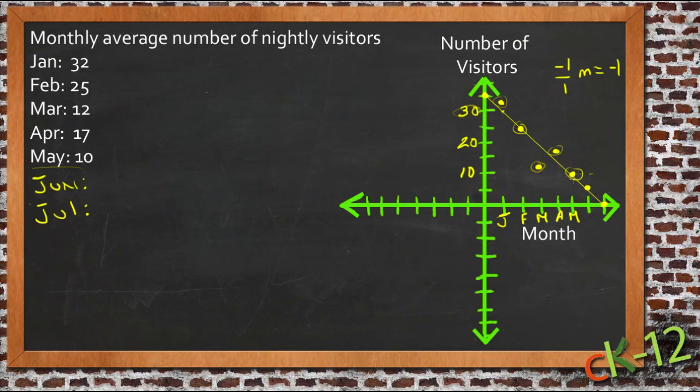So our average, our guess at what would probably happen in June is that there would be five less than ten, or five visitors.